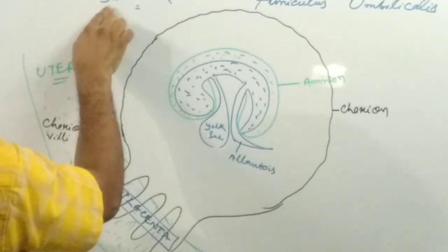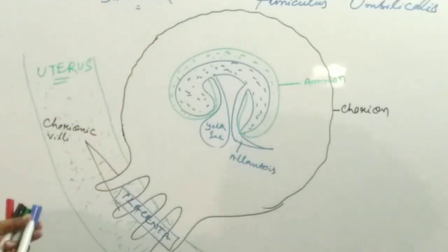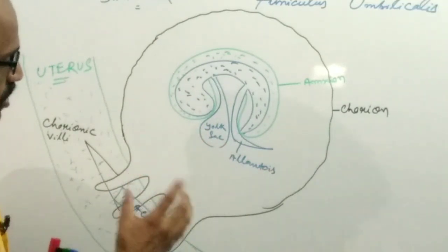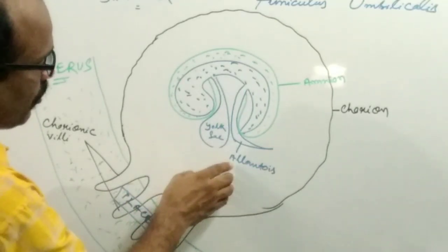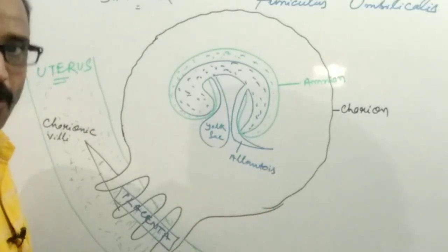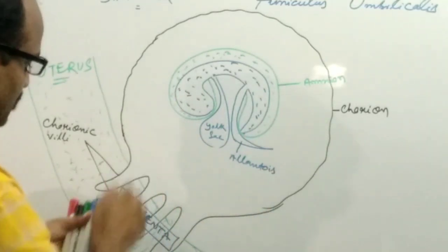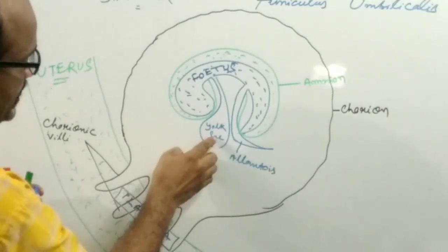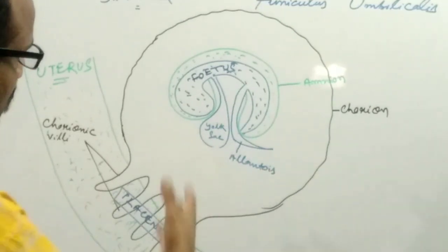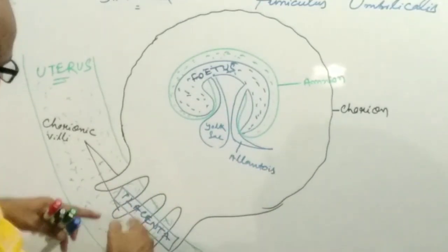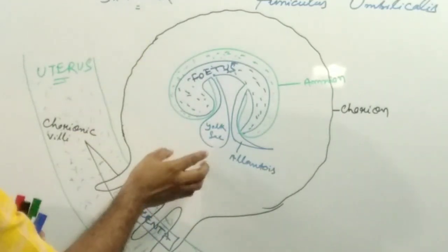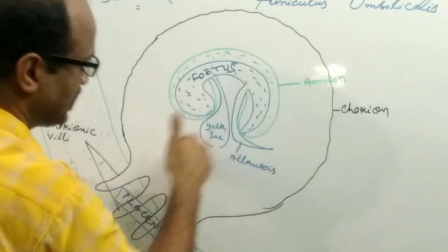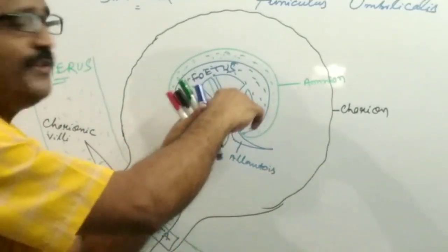By the fifth week of development there is a gradual degradation of the yolk sac. The yolk sac is the source of yolk or nutrients, and the allantois helps for the excretion process of the fetus. The yolk sac also helps for the production of RBCs or blood cells. This connection formed is the placenta, and by the fifth week of development there is the gradual degradation of the yolk sac.